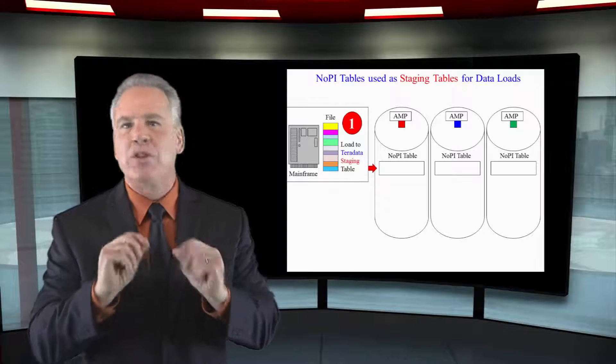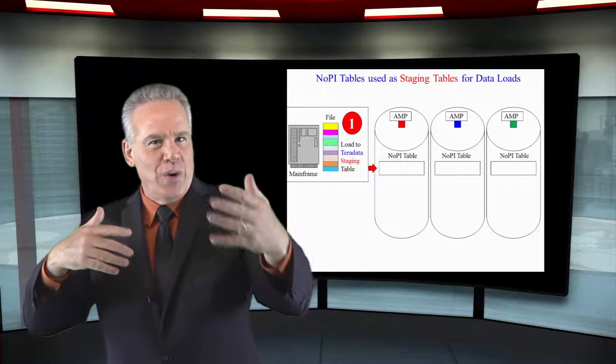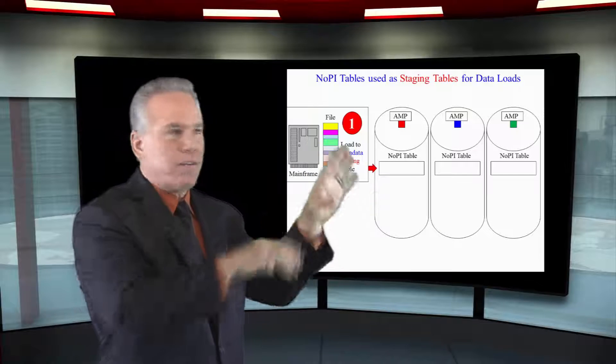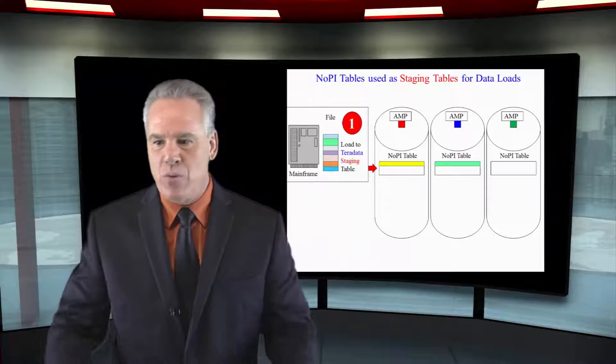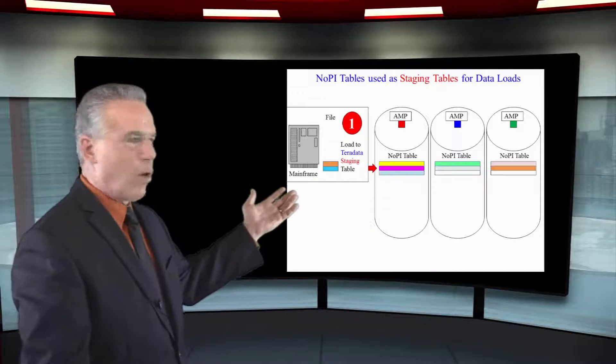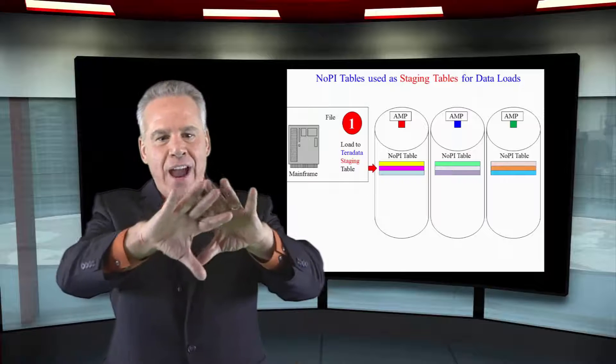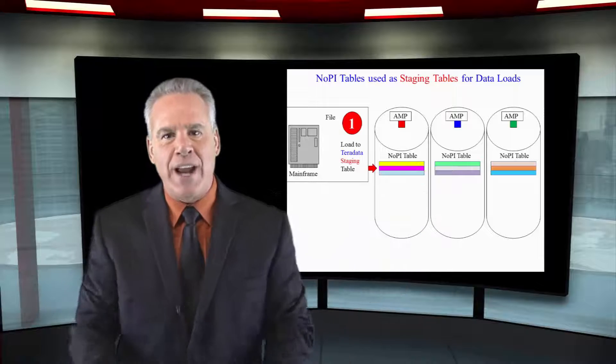So what happens quite a bit is that you might have a large production table. It's got indexes or join indexes on it and then Teradata says let's load from the outside source to a staging table. We'll create a table. It'll be a no primary index table. We'll load it very quickly and now it's on Teradata spread evenly on the amps and then we'll write an insert select statement.